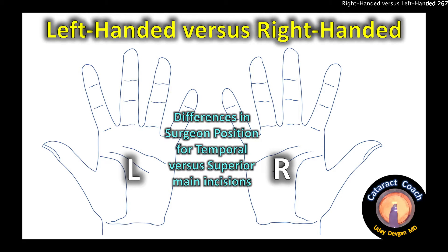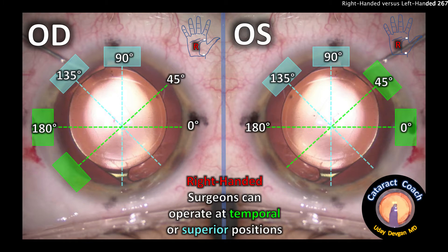Let's talk about left-handed versus right-handed in terms of the differences in surgeon position for operating with a temporal or superior main phaco incision. This is important because it determines access to the eye. Let's look at this picture — this is for a right-handed surgeon, showing the right eye and left eye.